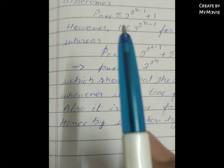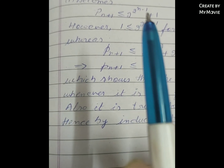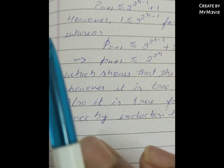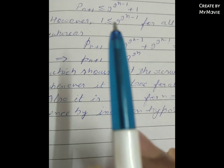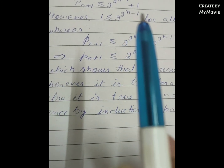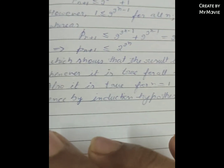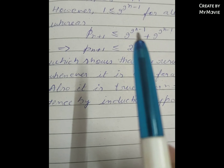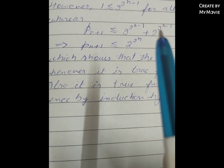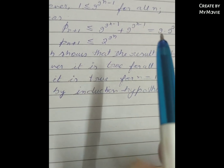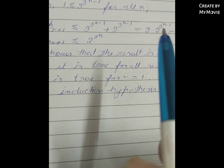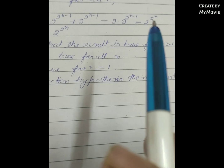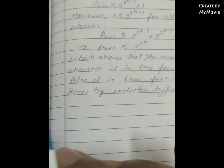Therefore, p(n+1) ≤ 2^(2^n − 1 + 1). However, 1 ≤ 2^(2^(n-1)) for all values of n. And so p(n+1) = 2^(2^(n-1)) + 2^(2^(n-1)) = 2^(2·2^(n-1)) = 2^(2^n).